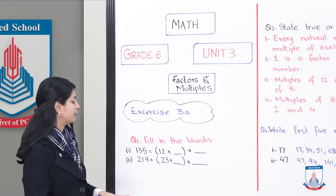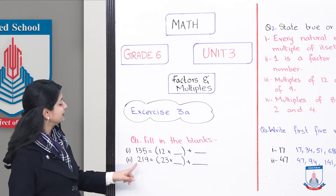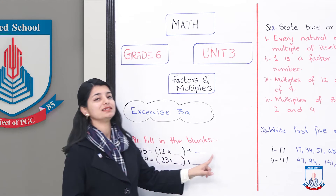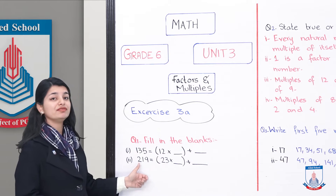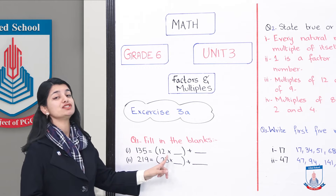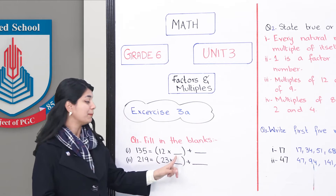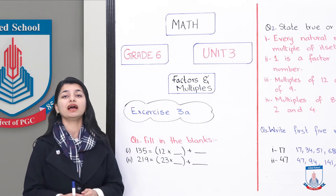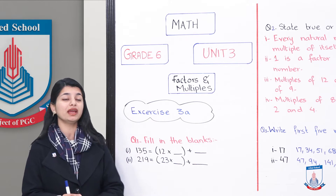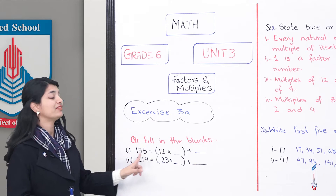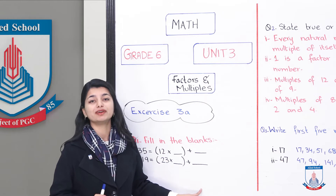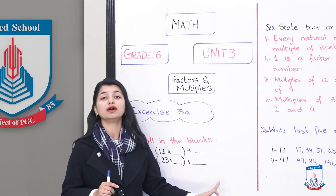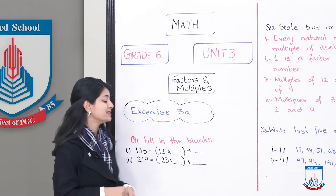Let's look at the first one: 135 equals 12 multiplied by dash, plus dash. So 135 is your dividend and 12 is your divisor. You have to find the quotient and the remainder. Simply write in your notebook 135 divided by 12 and solve it. When you do the division, you will find that the quotient is 11.